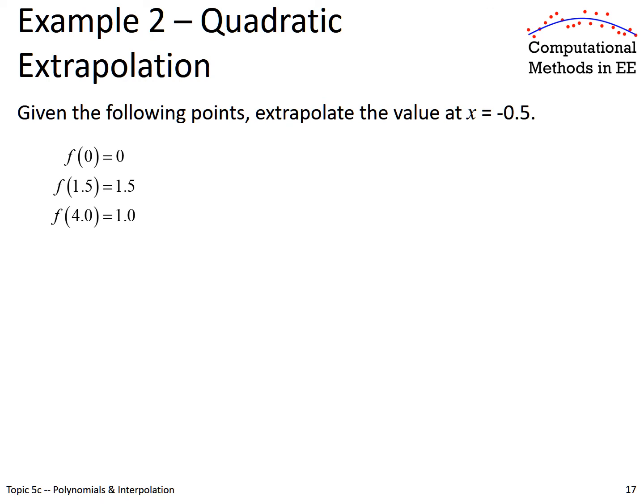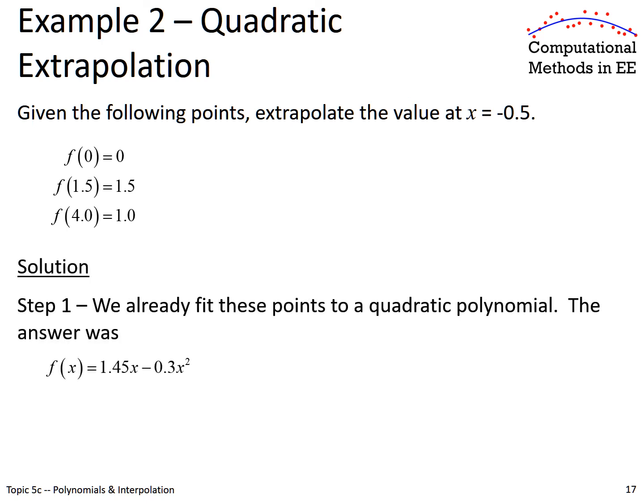We can do the same thing and extrapolate data. We actually want to guess what the function value is outside of our given range. We have measured samples here from x equals 0 all the way up to x equals 4. However, we would like a value from x equals minus 0.5. That is outside of this range. But we can still do it, and it follows the exact same procedure as interpolation. We do the curve fit. Behind this is we write our equation for our polynomial at each of our three points. We put that into matrix form, backward divide, get our polynomial coefficients, and then write our polynomial.